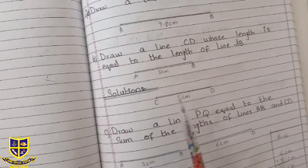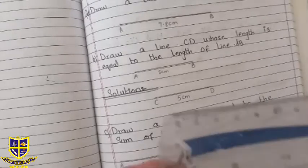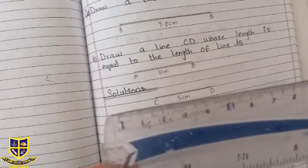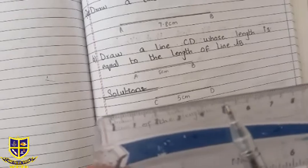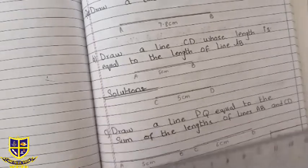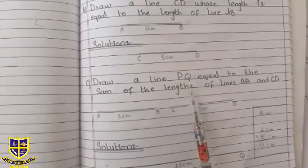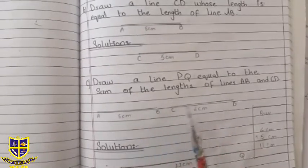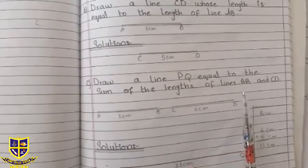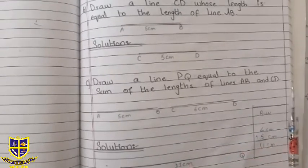In the solution we have to draw a line here to this line. Question number C is draw a line PQ equal to the sum of the length of lines AB and CD.